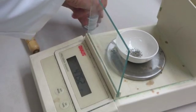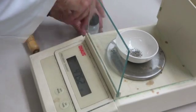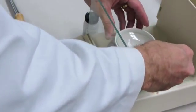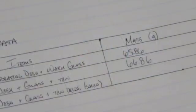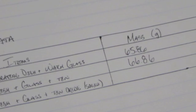Make sure that you've recorded both the mass of the evaporating dish and watch glass as well as the evaporating dish, watch glass, and the tin. You can record these in the table that you've already made in your journal.